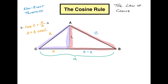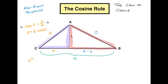We did something like that once before. If we look at that whole triangle, we have X squared plus H squared equals B squared — that's the Pythagorean theorem. Rearranging gives us H squared equals B squared minus X squared. And why did I do that? Because I want to focus on this other triangle, where H squared plus (A minus X) squared equals C squared.